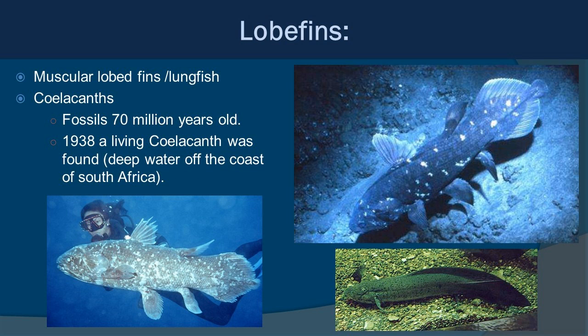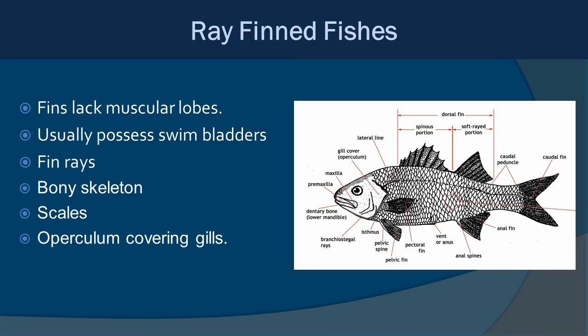The coelacanth itself has not really changed much over these millions of years, and looking at footage of them makes you think of what the oceans would have looked like when they were the rule, not the exception. Now let's look at ray-fin fishes — these are generally the most common fish you see when snorkeling, diving, fishing, in aquariums, or eating seafood. They lack muscular lobes, tend to have swim bladders, have fin rays — both spiny and soft — a bony skeleton, scales, and an operculum covering their gills.